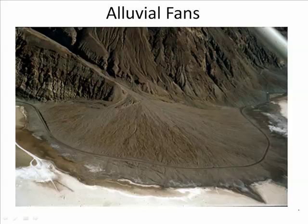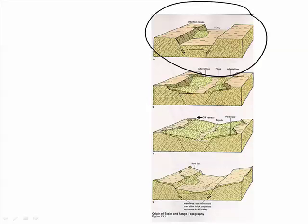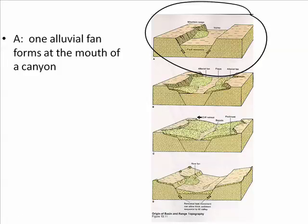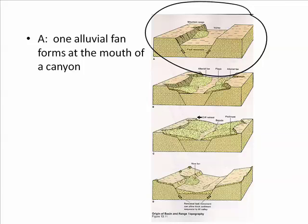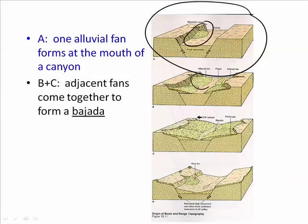Once a flash flood produces a mud flow or debris flow, it gets down to the bottom of the canyon and heads into the basin. The basin is flat, so the water slows down, dropping its alluvium and resulting in an alluvial fan. This alluvial fan is in Death Valley, right next to Badwater Basin. As canyons cut into the range, alluvial fans form at the base, and the process continues until two alluvial fans join each other to form a bahada.